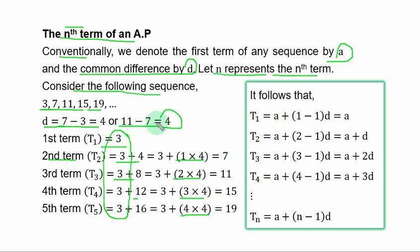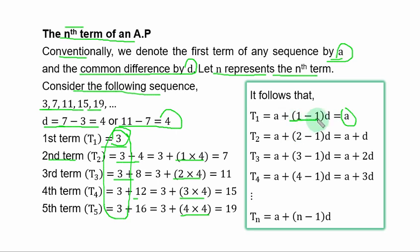The first term is always A. Replacing the numerical first term with A, we have the multipliers 1, 2, 3, 4 times the common difference respectively. For the first term, we need 0 times D, so we subtract 1 from 1 to get 0, leaving only A. This gives us the pattern: first term is A, second term is A plus D, third term is A plus 2D, and so on.